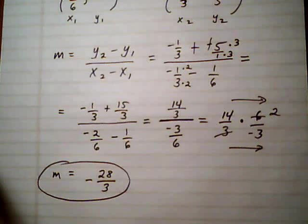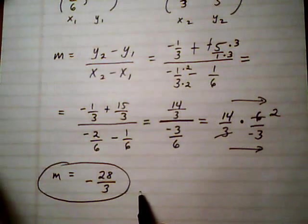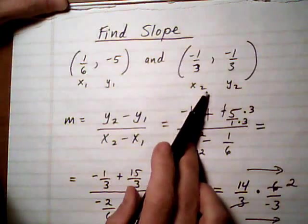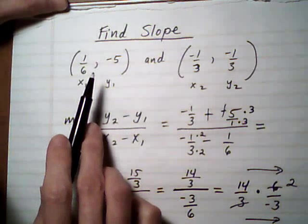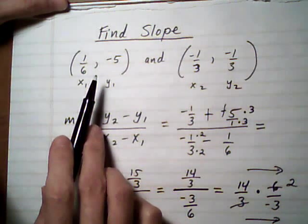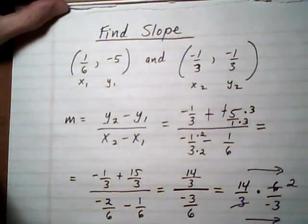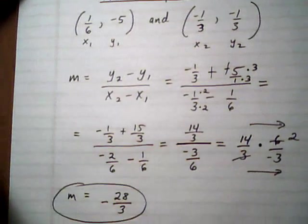And before we go on to the next one, a quick check that you could do would be to retry this problem and see if you get the same slope if you call this one point 1 and this one point 2. And you will get the same slope. You'll see that the minus signs cancel out in just the right way. You're going to end up with the same slope either way. So that would be good practice for you.